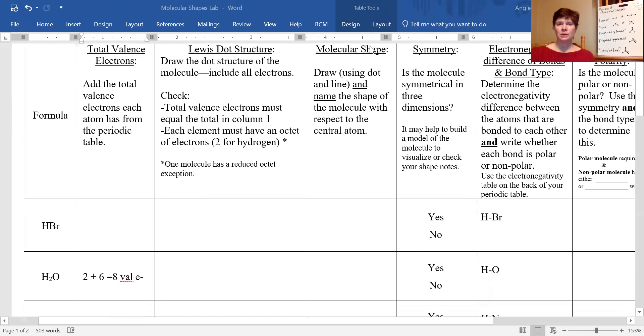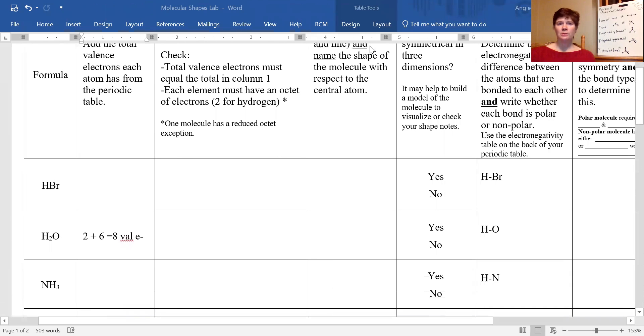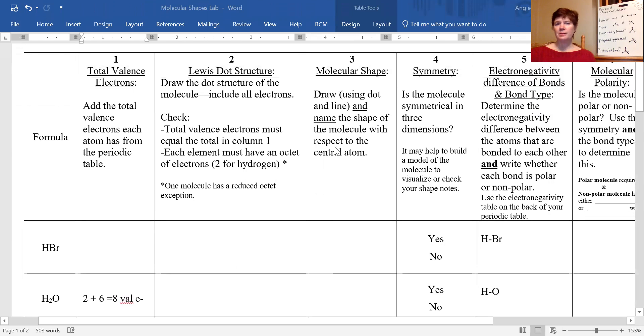So we're going to go back to our H2O, which we determined had eight valence electrons. You should have drawn the molecular electron dot structure or Lewis dot structure, and we're going to work with that to fill out columns 3 and 4, where we're talking about drawing out the shape in a method that allows us to see number of bonds and number of lone pairs and also naming.